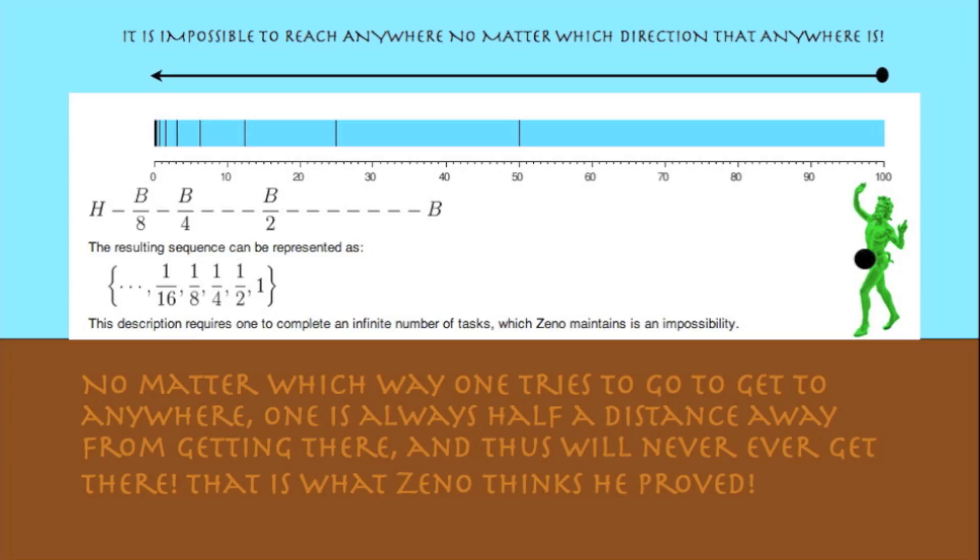No matter which way, which direction one tries to go, to get to anywhere, one is always half a distance away from getting there. And thus will never ever get there. That is what Zeno thinks he proved.